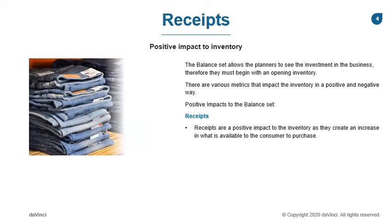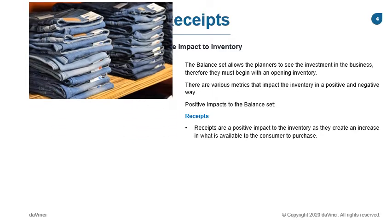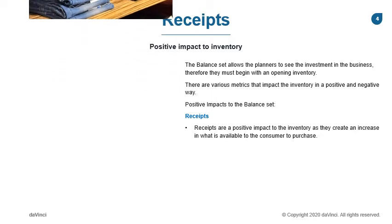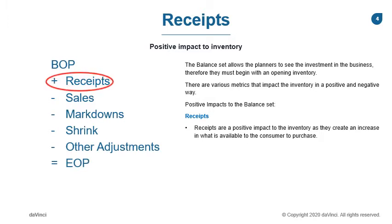In the last few sessions, we discussed the balance set and the various metrics that decreased your inventory. Now we will discuss the metric that increases your inventory: receipts. Receipt planning, as we mentioned, is done both pre-season and in-season with open to buy planning. Receipts can be new merchandise or repeat orders of merchandise already in your store. Planners will be planning their receipts to ensure they have enough inventory to meet the sales plan for the forward periods.